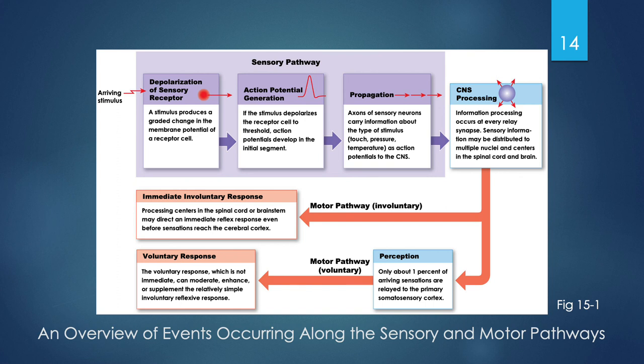If we step on a nail or something hot, we have two response options: voluntary or involuntary motor pathways. The involuntary pathway processes in the spinal cord or brain stem, giving us immediate reflexes before we're even consciously aware — because the sensation hasn't reached the cerebral cortex yet. The voluntary response comes a bit later and can moderate the involuntary reflexive response. Interestingly, in the voluntary motor pathway, our perception only allows awareness of about 1% of all arriving sensations at our primary somatosensory cortex.